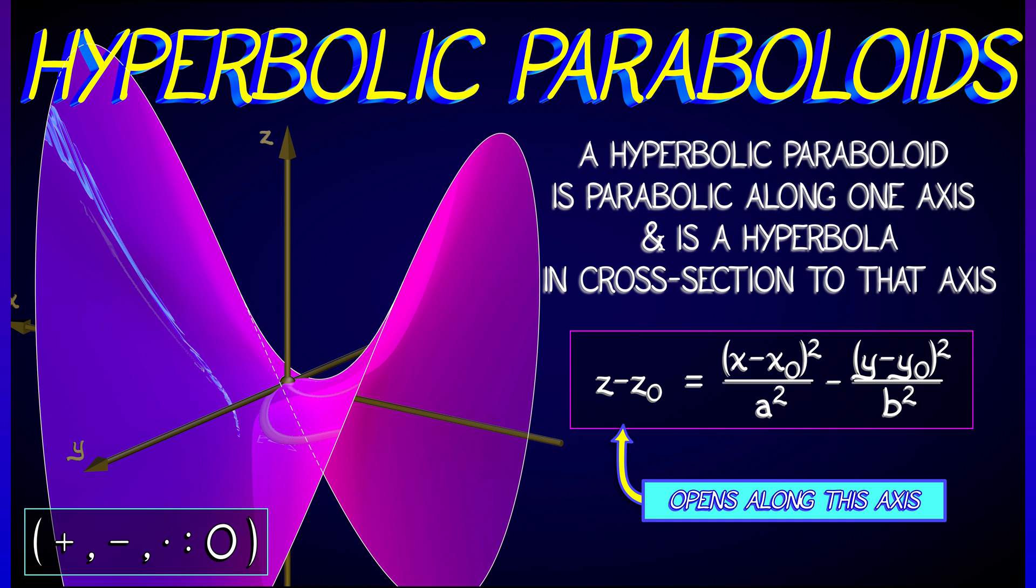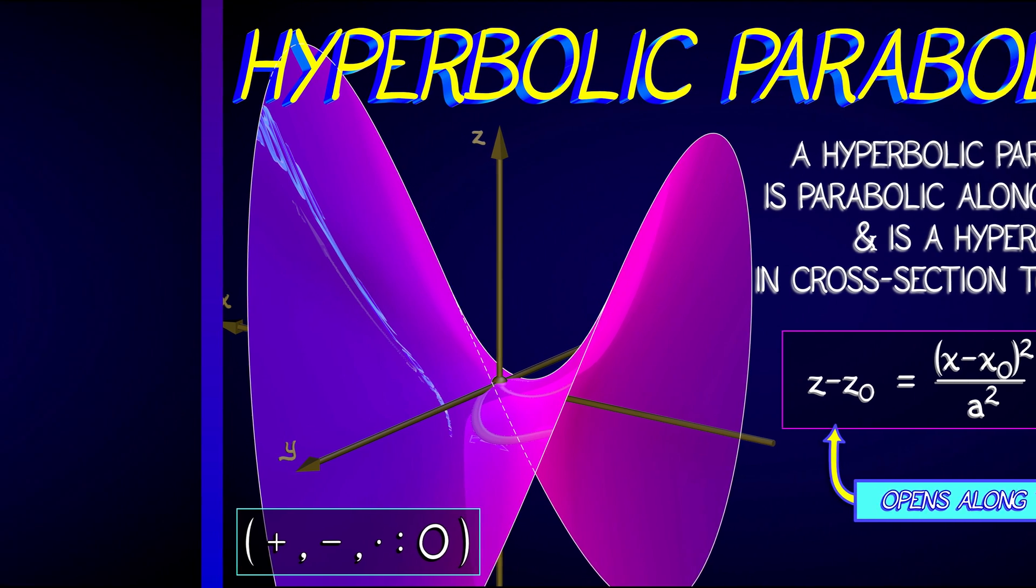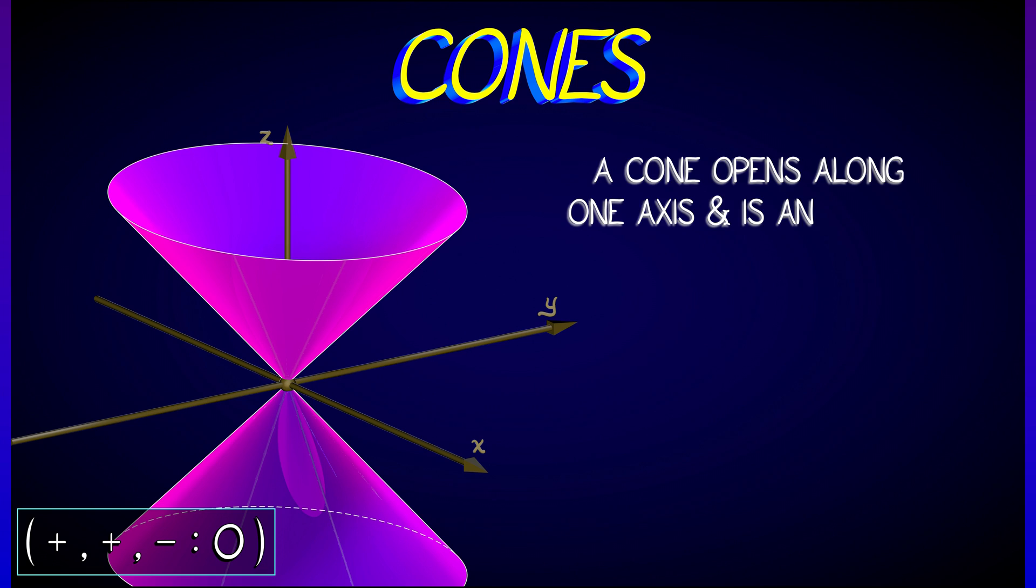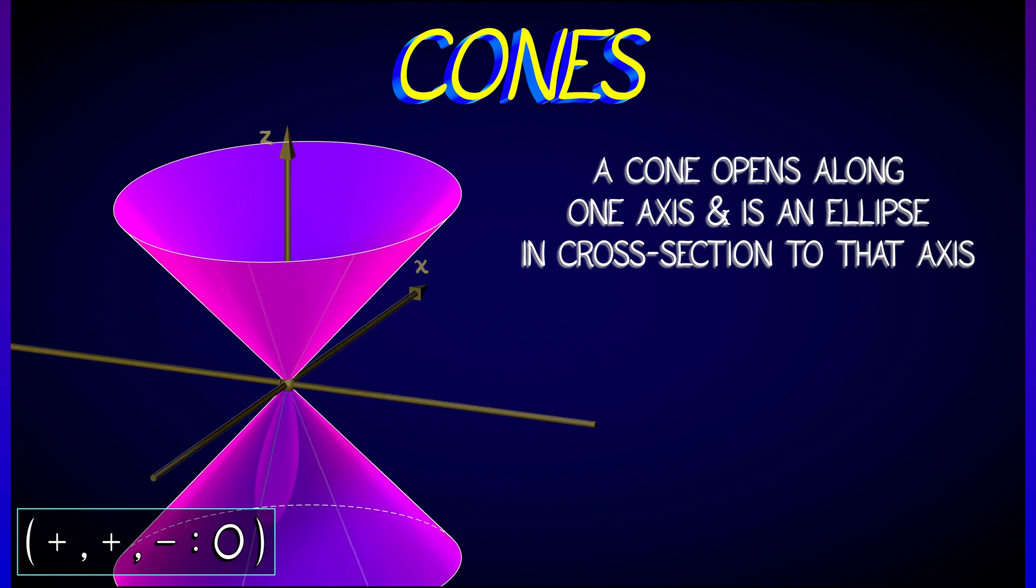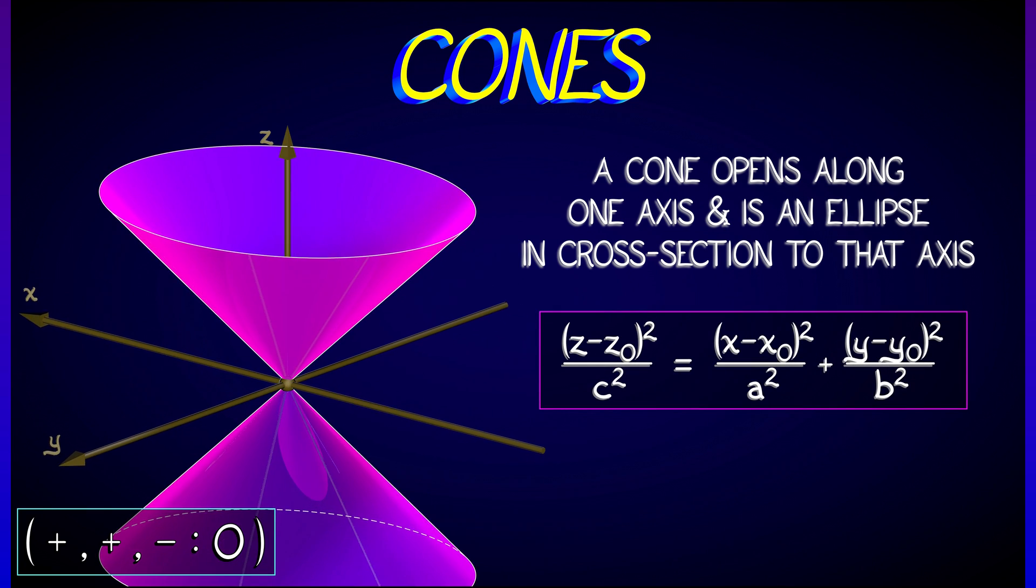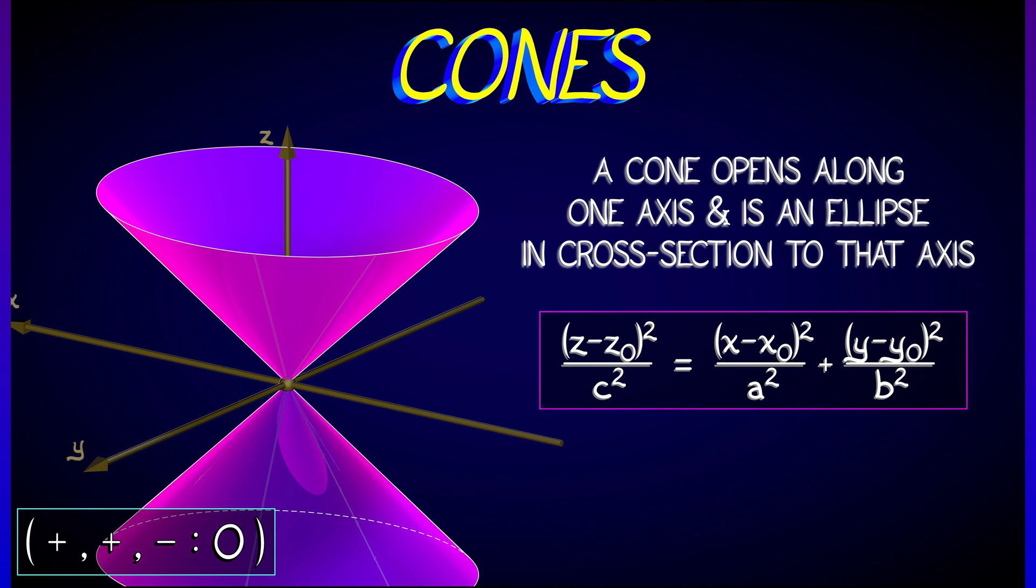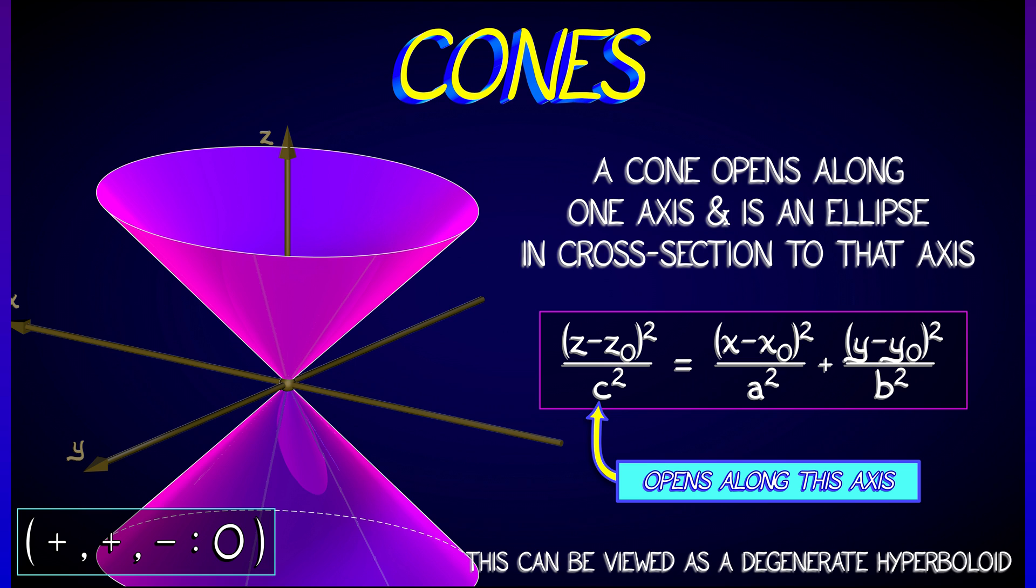We can also consider cones, which can be thought of as something like a degenerate hyperbola, either one-sheeted or two-sheeted, where it comes down to a point. Now, these cones have their own quadratic expression, off of which you can read the axis along which the cone opens up. And what you want to keep in mind here is that these formulae always lead to cones that open in both directions.